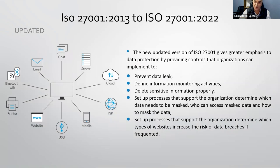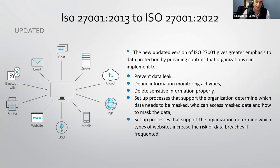The new updated version of ISO 27001 gives greater emphasis on data protection by providing controls that organizations can implement to prevent data breaches: defining information monitoring activities, deleting sensitive information properly, setting up processes that support the organization, determining which data needs to be masked, who can access masked data, and how to mask the data. Access by employees should be on a need-to-know basis, in line with EU GDPR requirements.